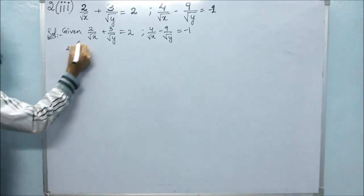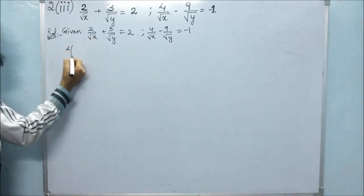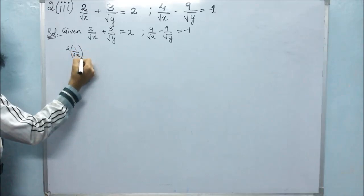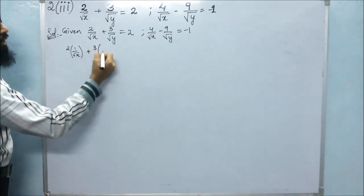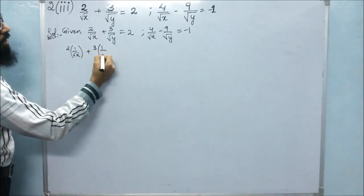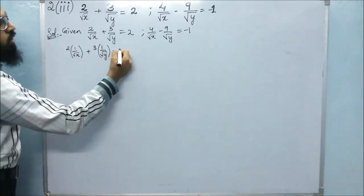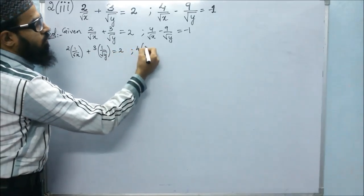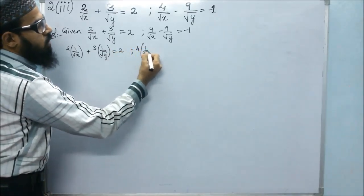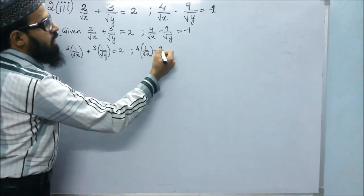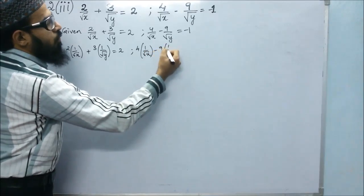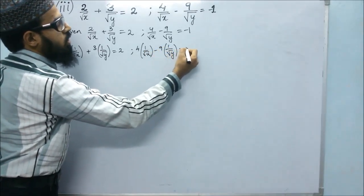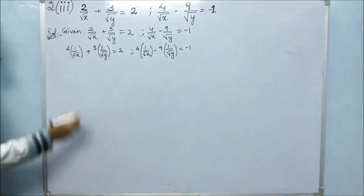Let us write this separately: 2 times 1 by root x plus 3 times 1 by root y is equals to 2, and 4 times 1 by root x minus 9 times 1 by root y is equals to minus 1.